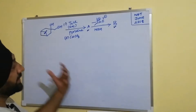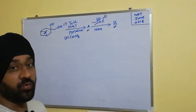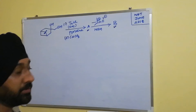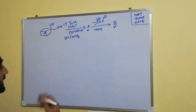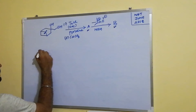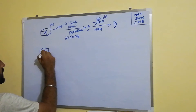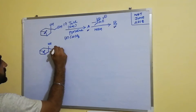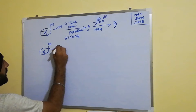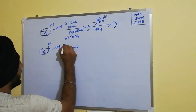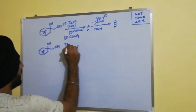Then compound A is subjected to treatment with trimethylsulfonium iodide in the presence of a base, sodium hydride, to give compound B. So we have this starting material which is a diol in which one of the hydroxy groups is primary and the other one is secondary.